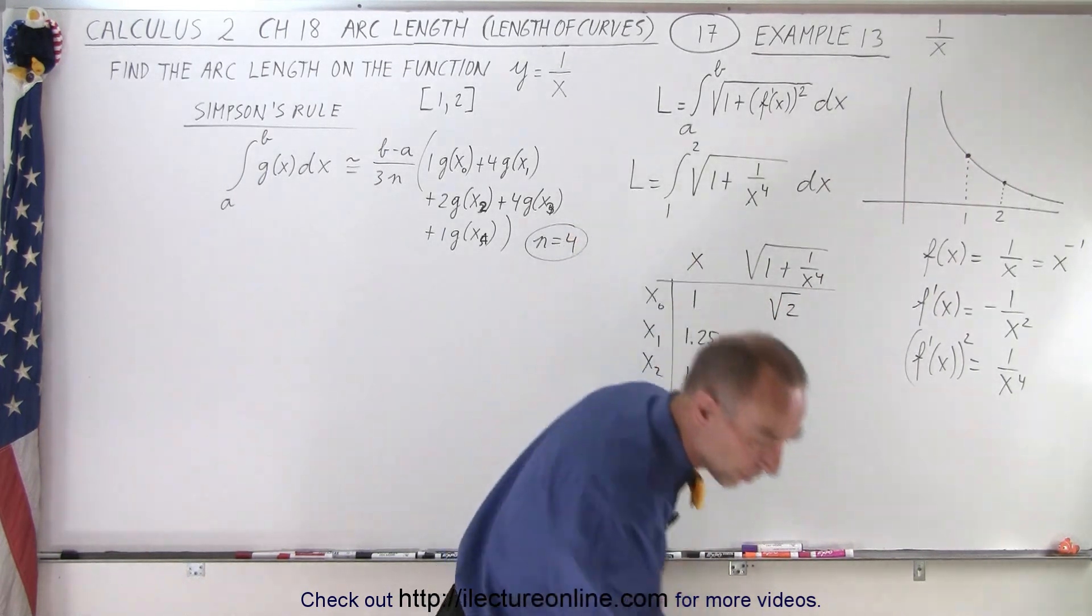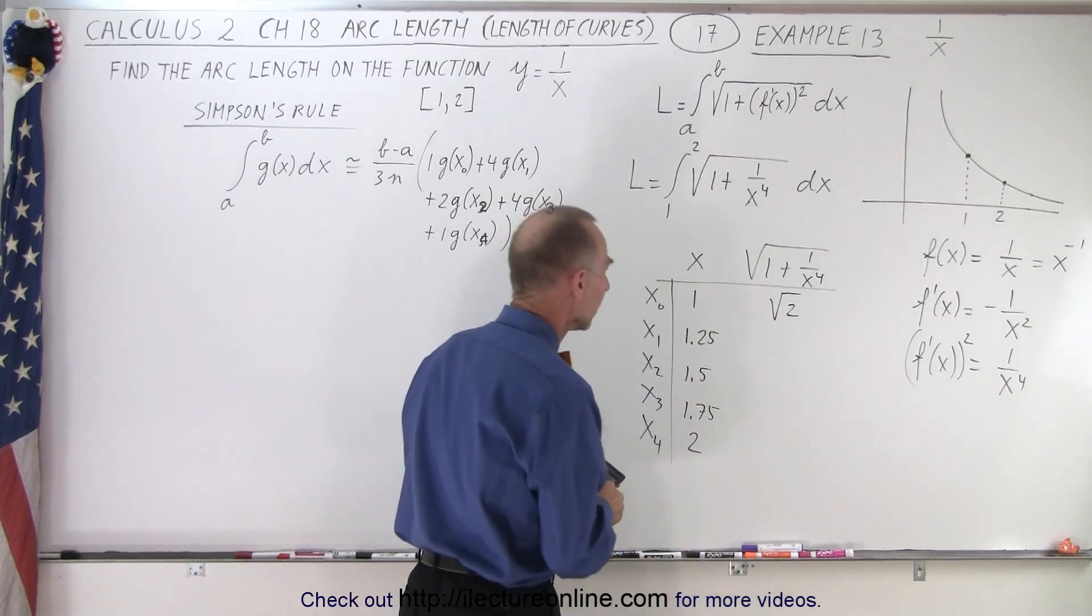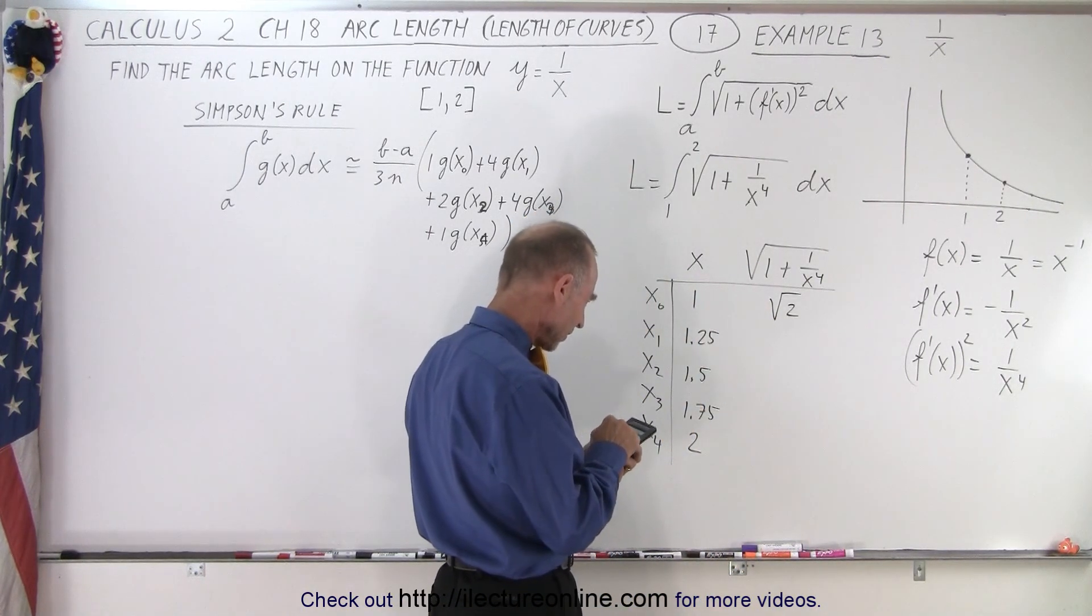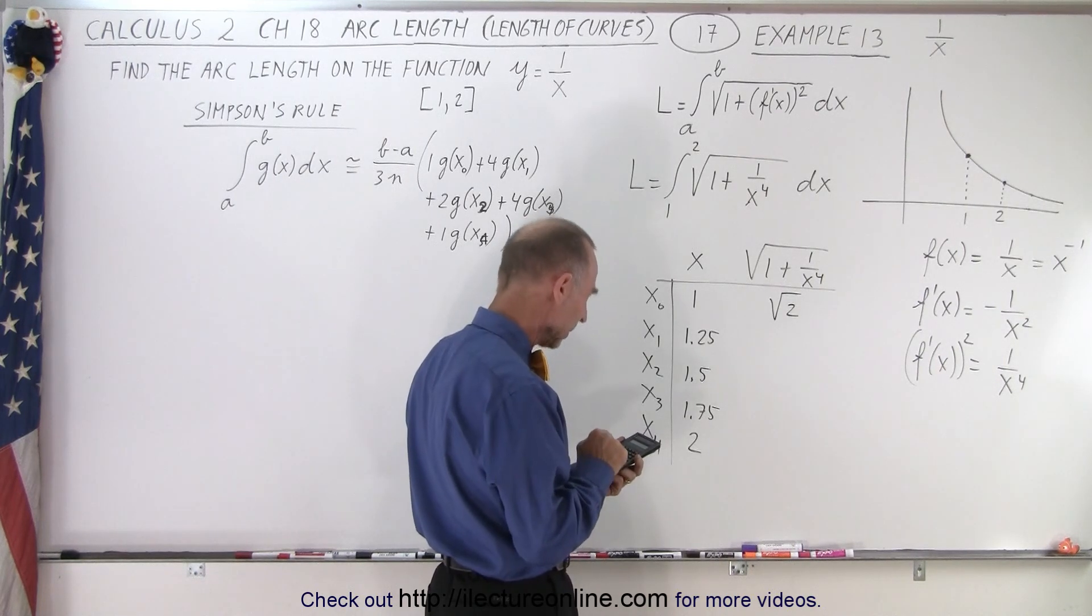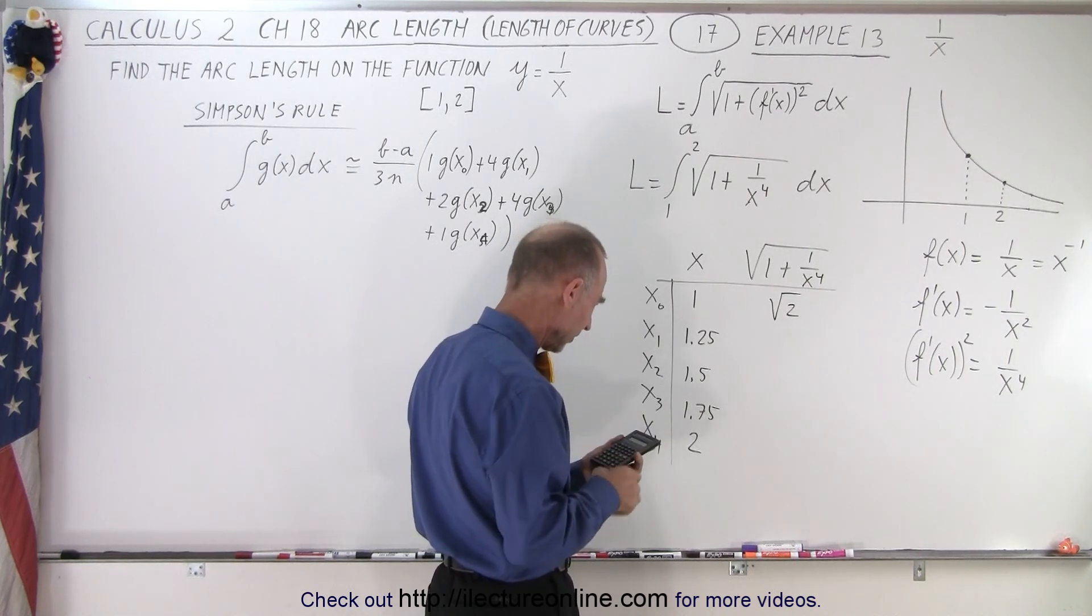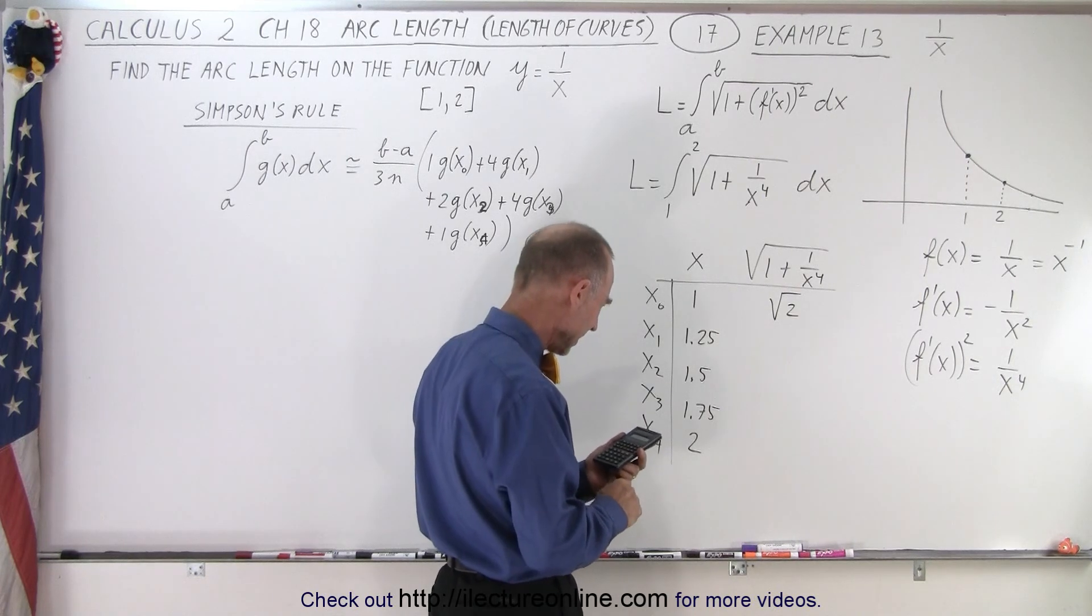Now, we need a calculator for the others. So when x is 1.25, 1.25, the fourth root, k plus 1. And now we take the square root of that. And we get 1.187.